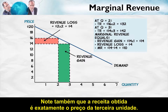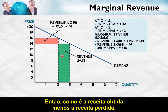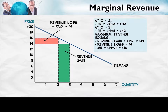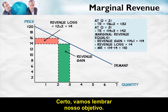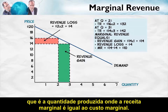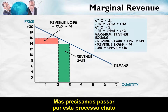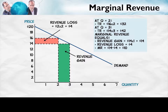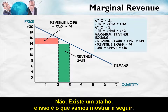Notice that the revenue gain is just the price of the third unit, so since marginal revenue equals revenue gain minus revenue loss, we can see right away that for a monopolist, marginal revenue must be less than the price. Now, do we need to go through this tedious process to find marginal revenue for each unit? No — there's a shortcut, and that's what I'm going to show you next.